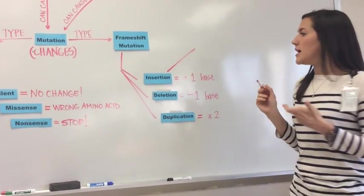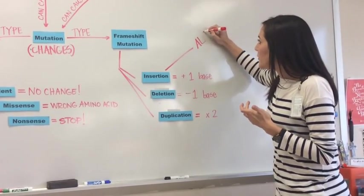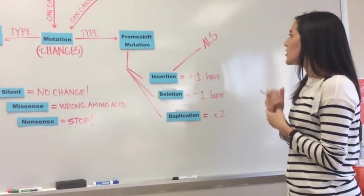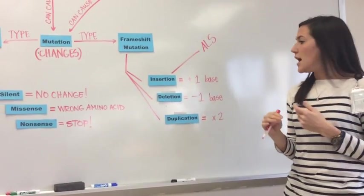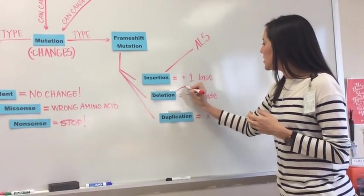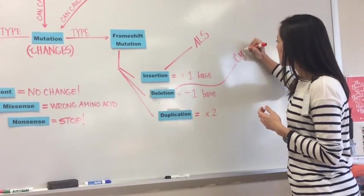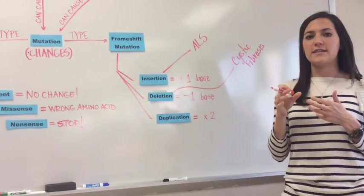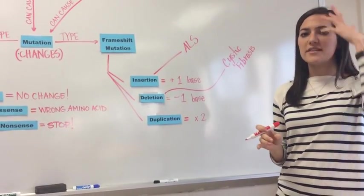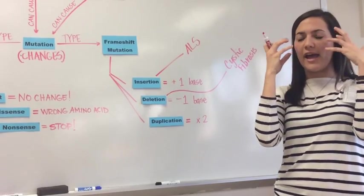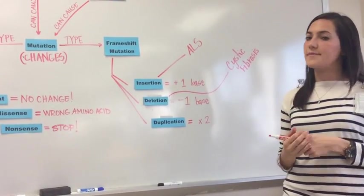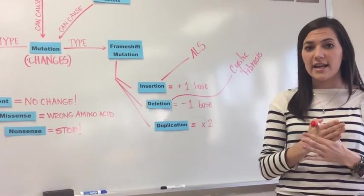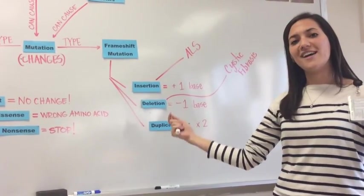One example of an insertion mutation is called ALS. You might've heard of the ALS ice bucket challenge. It stands for amyotrophic lateral sclerosis. And so that is a result of an insertion mutation. Another example of our deletion mutation is called cystic fibrosis. Cystic fibrosis is the disease that affects your lungs and the heart and the sinuses, so your breathing passages in your nose and your head. And it causes difficulty breathing and things like that. So now you have your diagram about your mutations. Make sure you are annotating your notes. And if you have any questions, see your teacher in class.